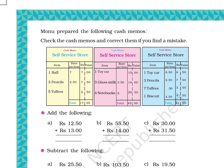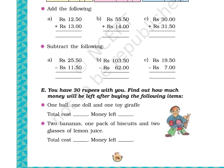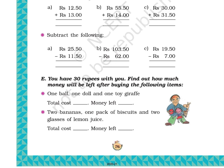Question 1: Add the following. Part A: Rs. 12.50 + Rs. 13. Part B: Rs. 55.50 + Rs. 14. Part C: Rs. 30 + Rs. 31.50. Question 2: Subtract the following. Part A: Rs. 25.50 – Rs. 11.50. Part B: Rs. 103.50 – Rs. 62. Part C: Rs. 19.50 – Rs. 7.